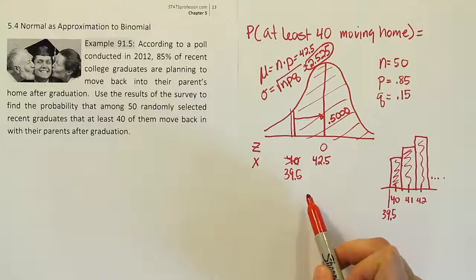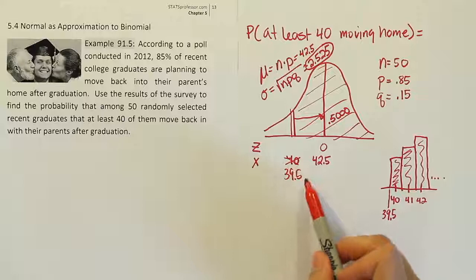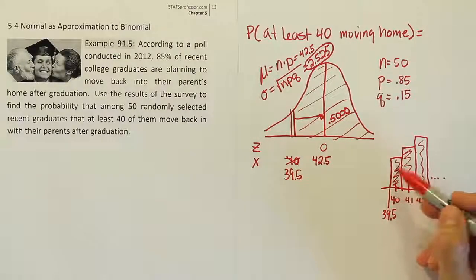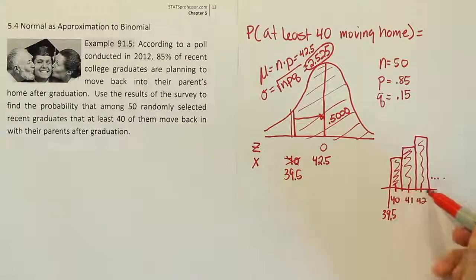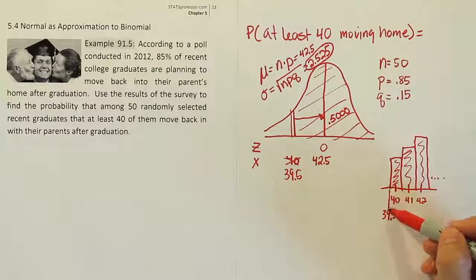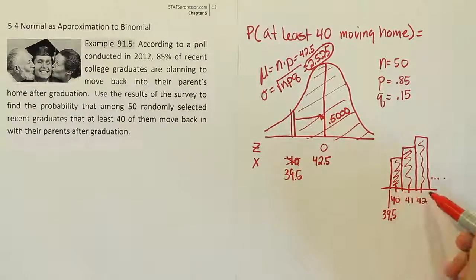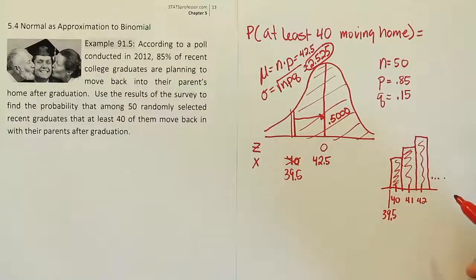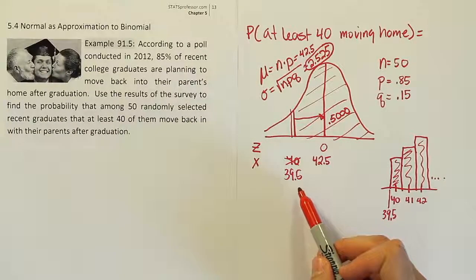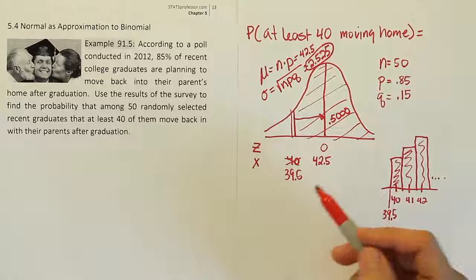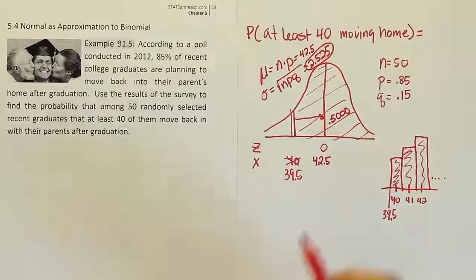If I wanted to find the probability of 40 or more, I'd have to take the area here plus the area here plus the area here, so on and so forth, add them all together, and that would be my total answer. Notice this rectangle is centered at 40, which means it actually begins over here at 39.5. It starts a little before 40, one half before 40. If I want to improve my area here, improve my probability approximation, I should actually start at a little before 40. So instead of using 40, I'm going to use 39.5. That's referred to as continuity correction.